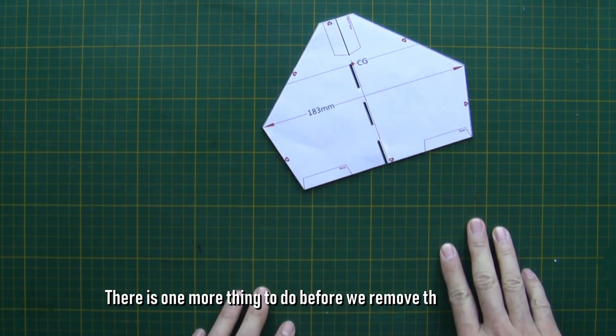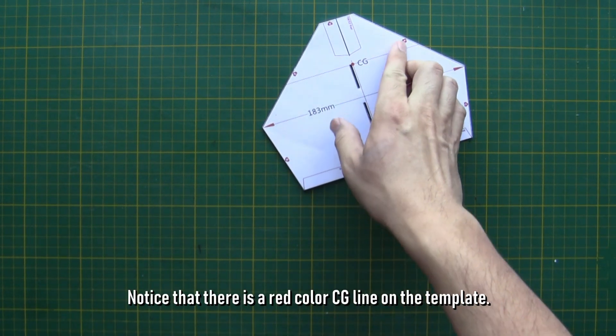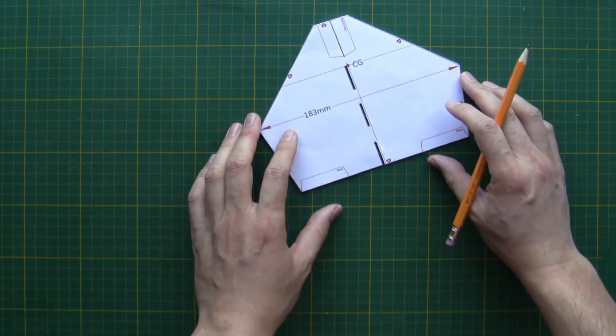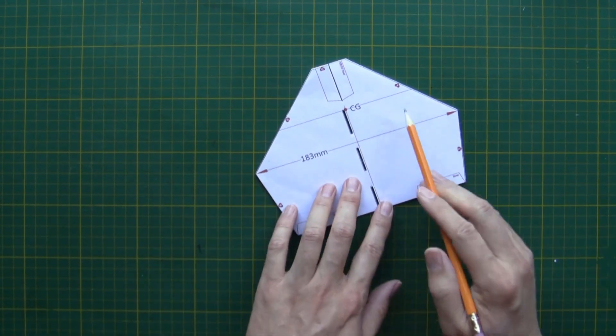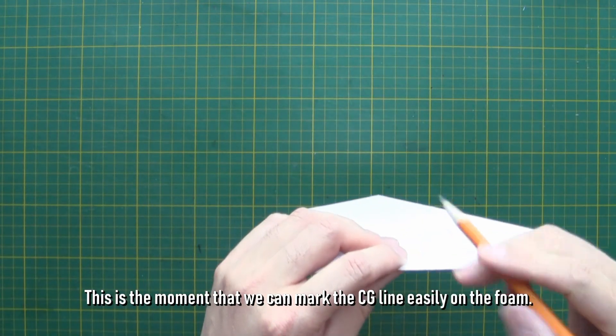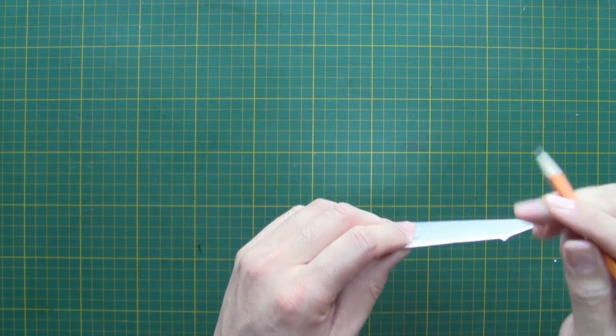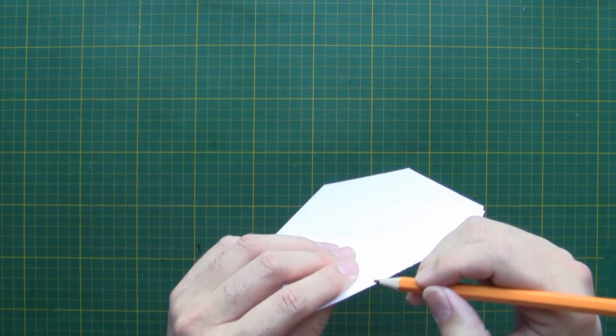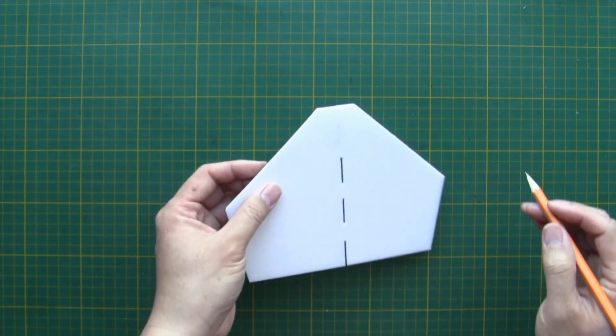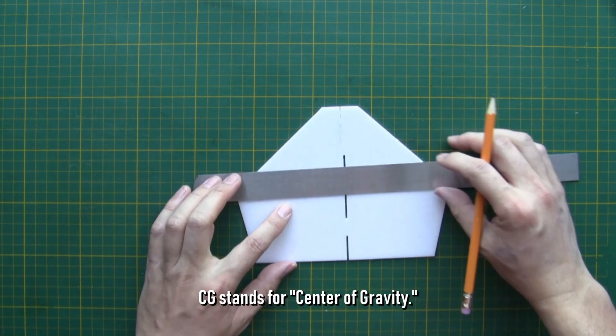There is one more thing to do before we remove the template. Notice that there is a red color CG line on the template. This is the moment that we can mark the CG line easily on the foam.